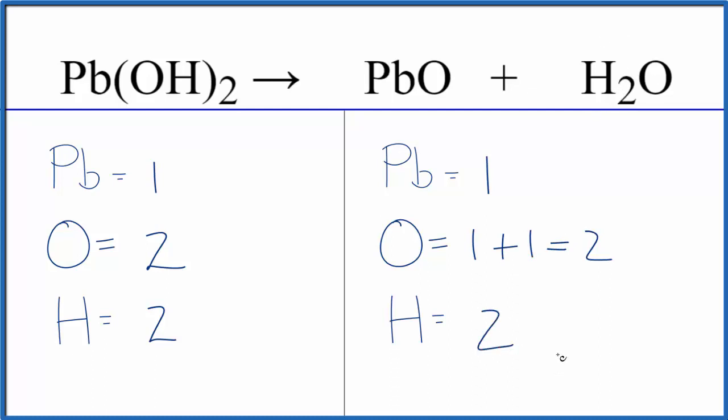It looks like everything is the same on both sides, so this equation is actually already balanced. We have one lead on each side, two oxygens, and two hydrogens.